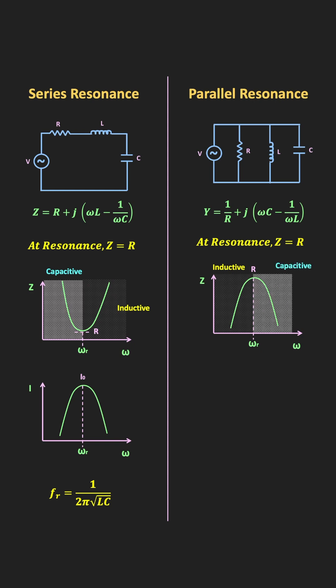In this parallel resonance, since at resonance the impedance is maximum, if we see the current curve, this is how it will look like. At resonance, the current in the circuit will be minimum. And once again, this is the expression of the resonant frequency.